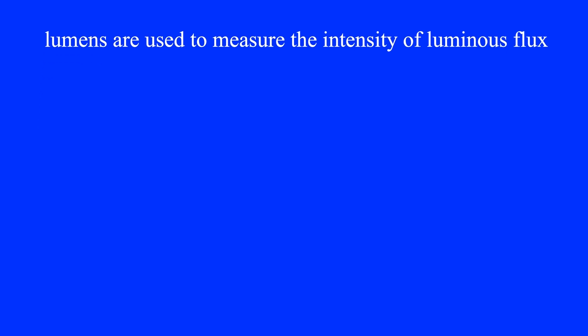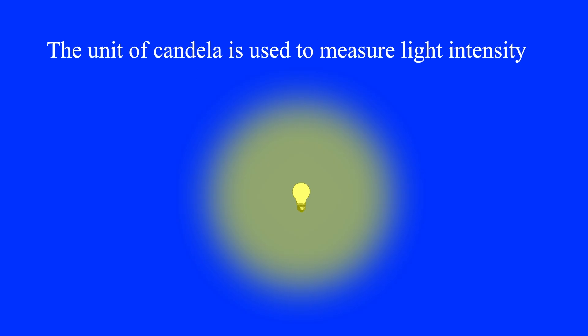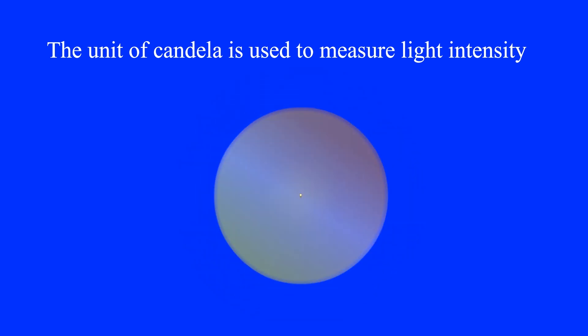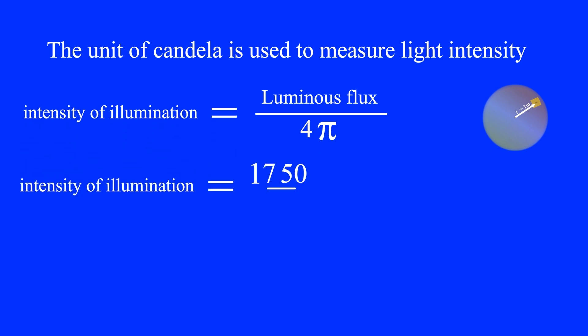While lumens are used to measure the intensity of luminous flux, the unit of candela is used to measure light intensity and the brightness of a light beam in a specific direction. The luminous intensity of a point source is the amount of luminous flux incident on one square meter of the inner surface of a sphere with a radius equal to one meter. Therefore, the intensity of illumination equals luminous flux divided by 4π. In the previous example, the luminous intensity of the light bulb equals 1750 divided by 4π, which equals 139 candelas.